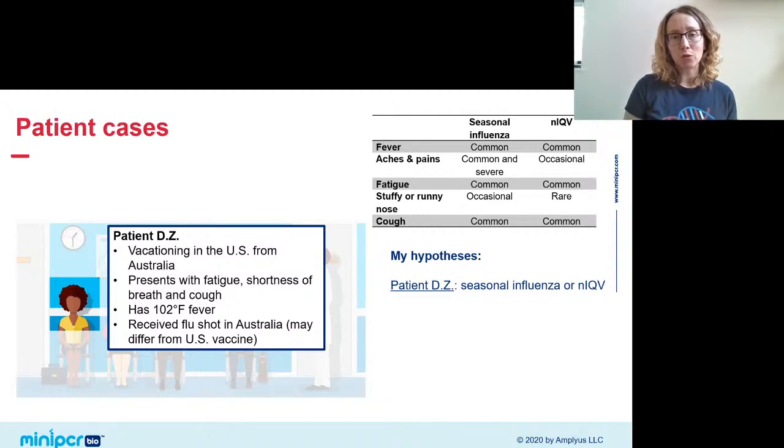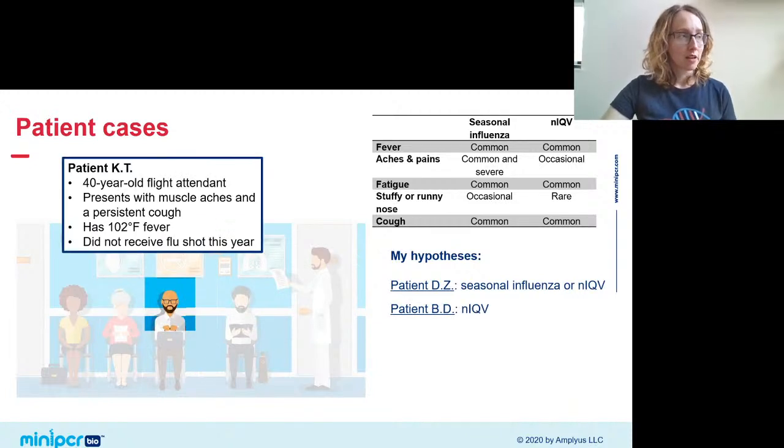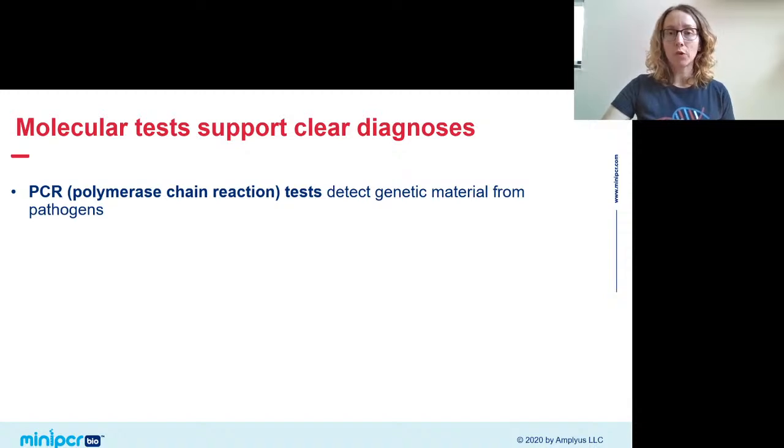And I think students will find this as they work the other cases. Some are easier than others, but they'll see just how much ambiguity there is unless you have a molecular test that you can turn to. And so part two of our lab, we're going to do just that. We're going to do a molecular test on each of our patients to get a more firm diagnosis for which disease they're stricken with. Specifically, we're going to be doing a PCR or polymerase chain reaction test to test for NIC-V and seasonal flu.